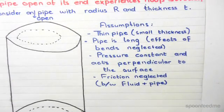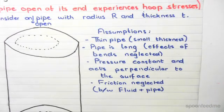Before we analyze hoop stresses, we need to make a few assumptions. We need to have a thin pipe to make sure that the hoop stresses act. By a thin pipe, I mean a small thickness, and this is to ensure that the hoop stresses are acting uniformly across the thickness. Another important thing to know is that the pipe is long, so the effects of bends are neglected.